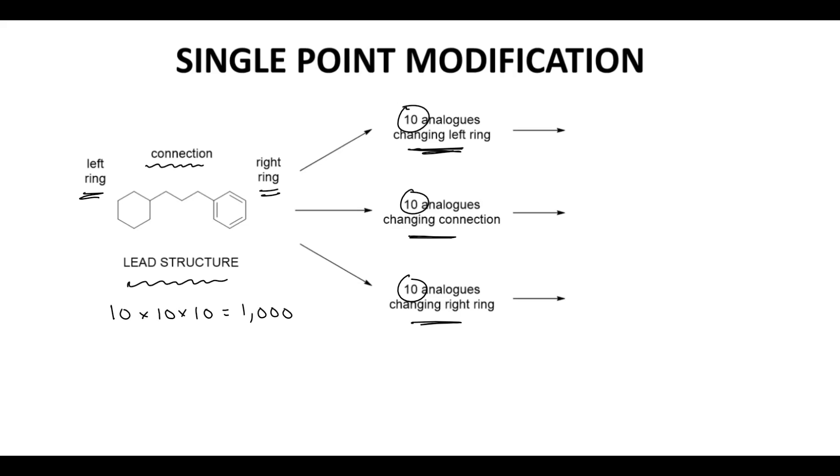We'll then test all 30 molecules to determine which new group on the left ring increased the potency the most, which change to the chain increased potency, and which group on the right made the best molecule.